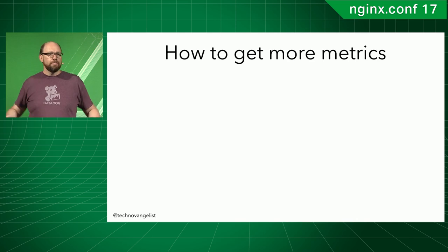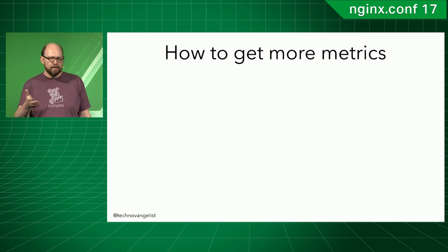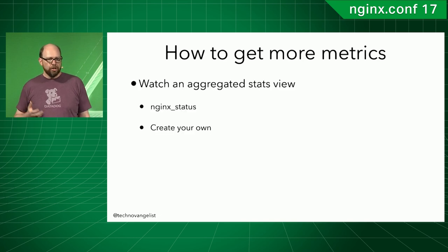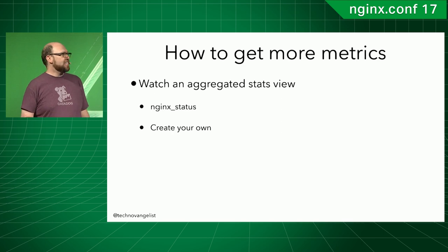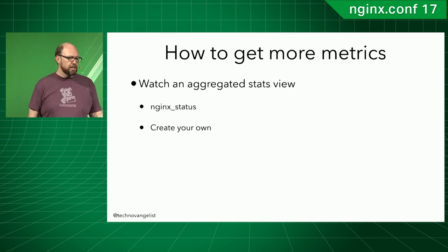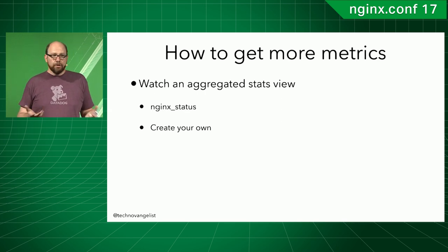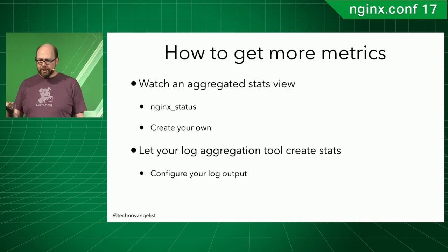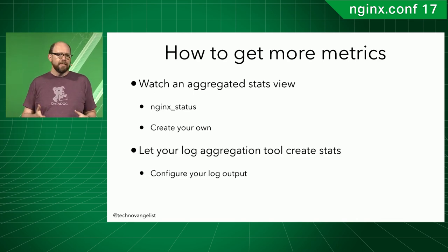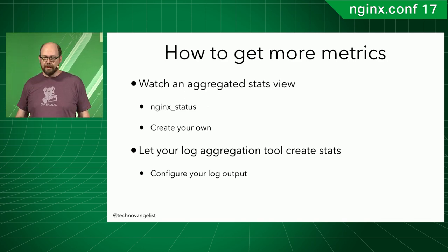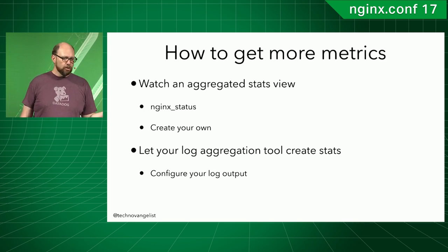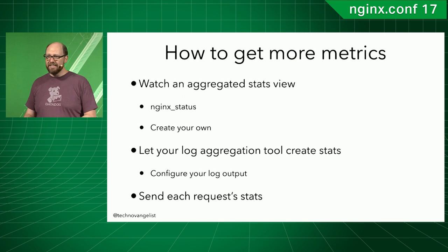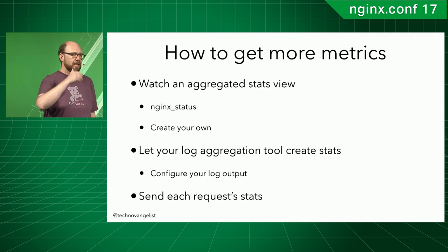How do you get more metrics? There are really three ways to get additional metrics your monitoring system can collect. First, you could have some kind of aggregated stats view — that's what the stub_status module or the Nginx Plus status module is. You could create your own. Second, you can let your log aggregation tool create the stats, meaning you need to get more metrics into your log files and configure your log output. Third, you could send all the stats from each request directly to your monitoring platform.